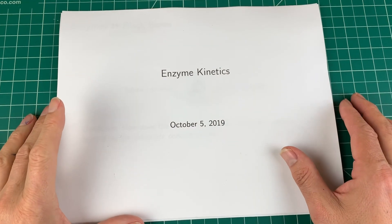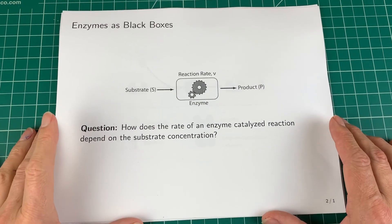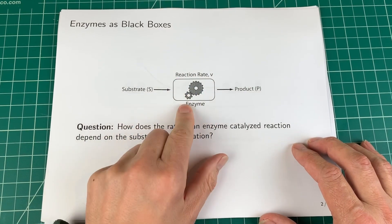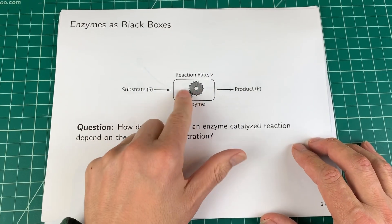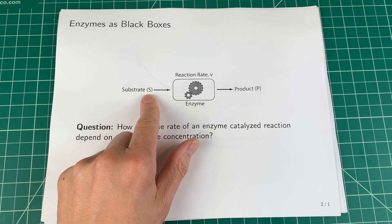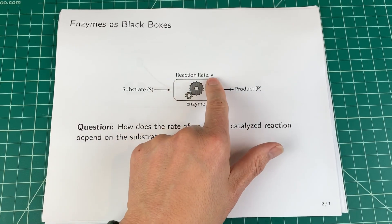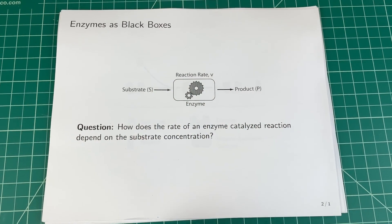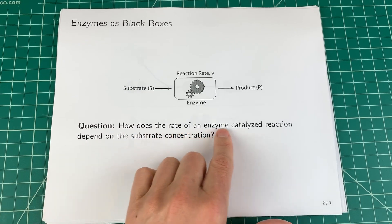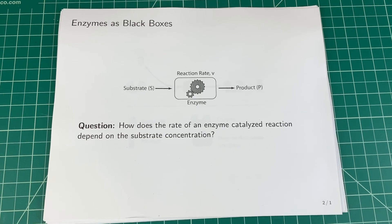Welcome to an enzyme kinetics tutorial. This diagram shows a box in the middle representing an enzyme — it's a black box. We don't know what's going on inside, but it converts substrate at a concentration S into product at a reaction rate V. What we're going to address in this tutorial is: how does the rate of an enzyme-catalyzed reaction depend on the substrate concentration?